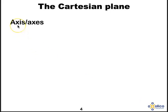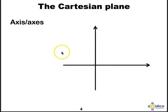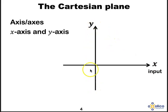First off, we have an axis or two or more axes. So this is an axis and these are axes. We have an x-axis and a y-axis. Your x-axis is your horizontal line and that represents the inputs whereas your y-axis is your vertical line and that represents your output.